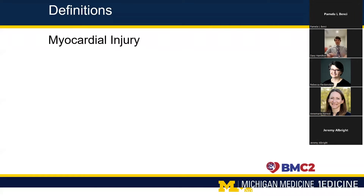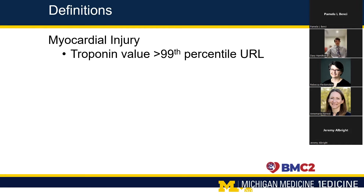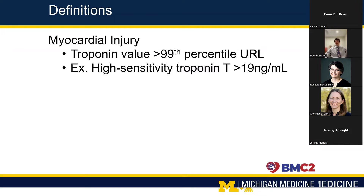I'm going to define three different terms. Unfortunately they sound very similar and are often used in an overlapping way. The first is myocardial injury. The second is myocardial ischemia. And the third is myocardial infarction. Myocardial injury is simple — it's really just an elevated troponin. An elevated troponin is defined as a troponin greater than the 99th percentile, or the upper reference limit. At the University of Michigan we use the high sensitivity troponin T, and the upper reference limit for that is 19. Other centers use troponin I or older troponin T assays where the upper reference limit might be as low as 0.1 or 0.3.